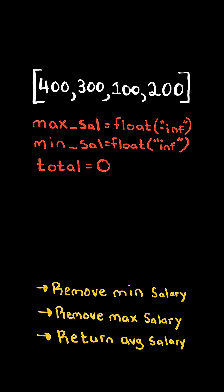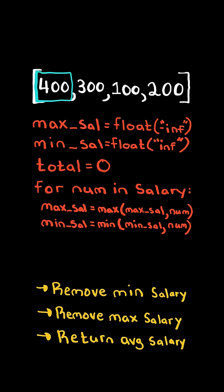We then initialize a total. We iterate through the salary and set max sal to the max of itself or the current number and set min sal to the min of itself or the current number. We then add the number to total and continue this process.